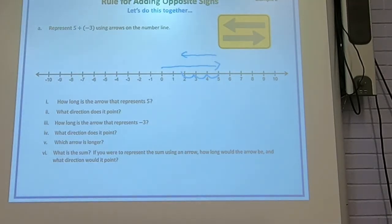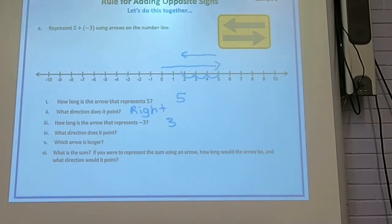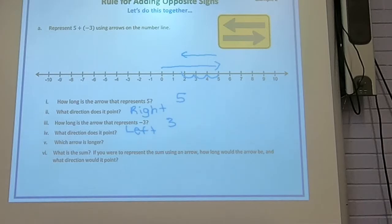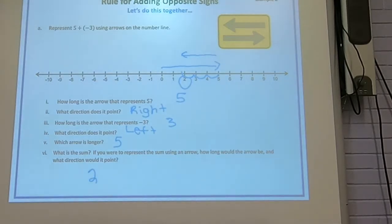How long is the arrow representing 5? Five. What direction? Right — it's positive. How long is the arrow representing negative 3? It's 3 — it can't be negative 3 long; it has to just be 3, but the direction tells you it's negative, so it goes left. Which arrow is longer? Obviously the one that's 5 is longer. What's the sum? We end up at 2. If you represent the sum using an arrow, it would be 2 long, going right because it's positive.